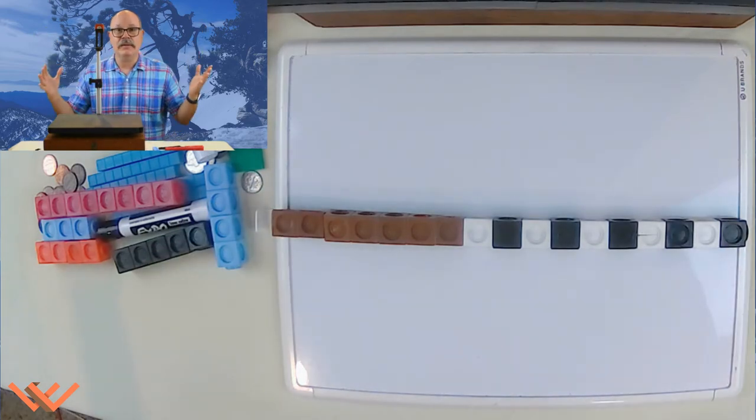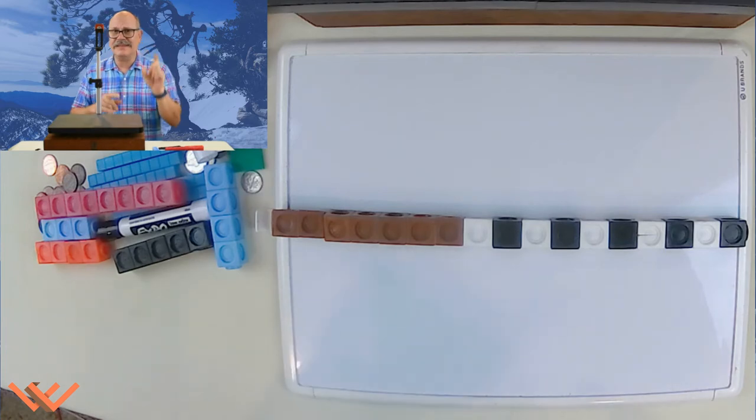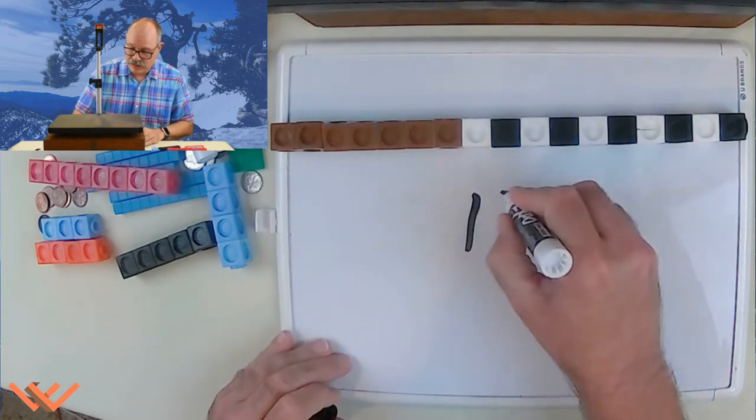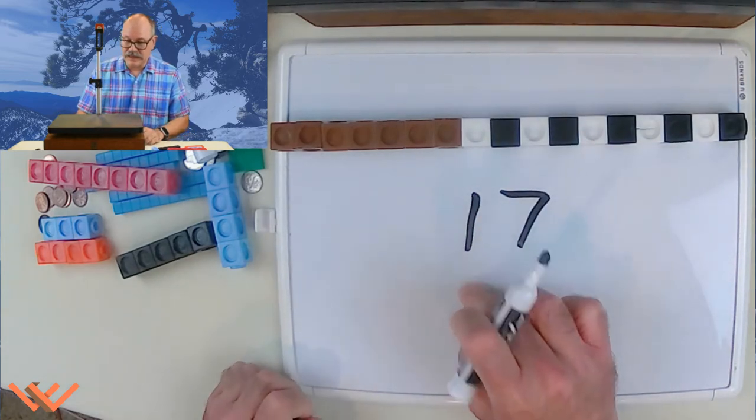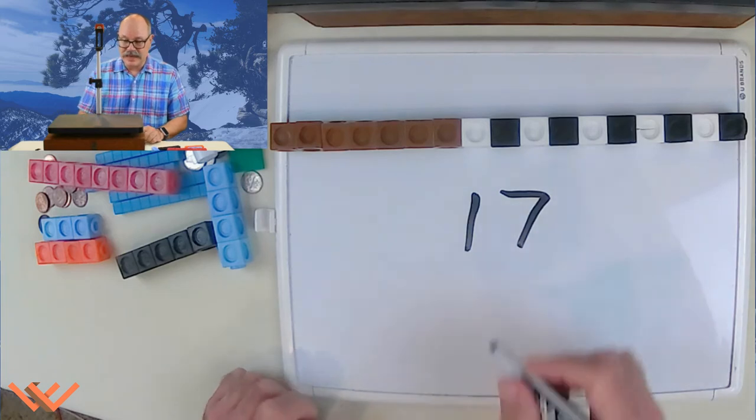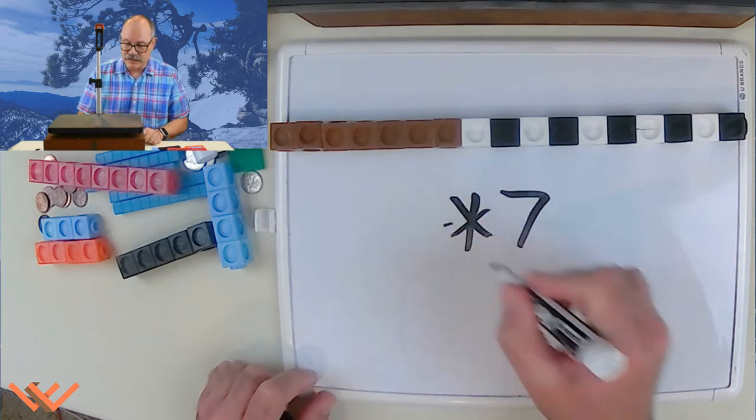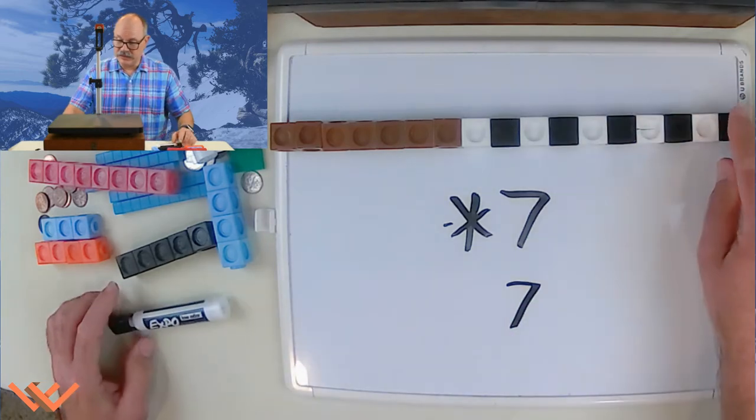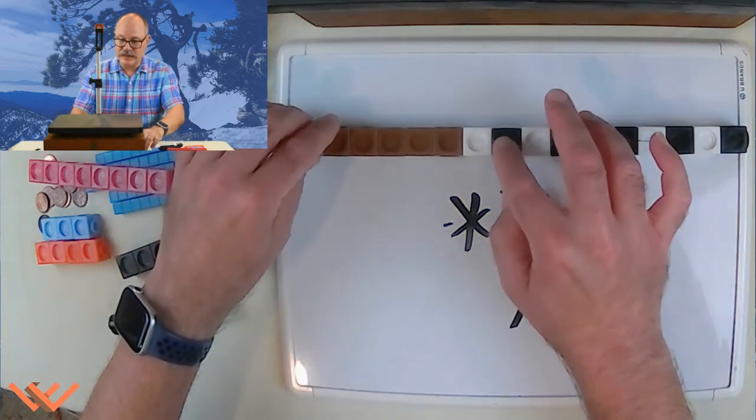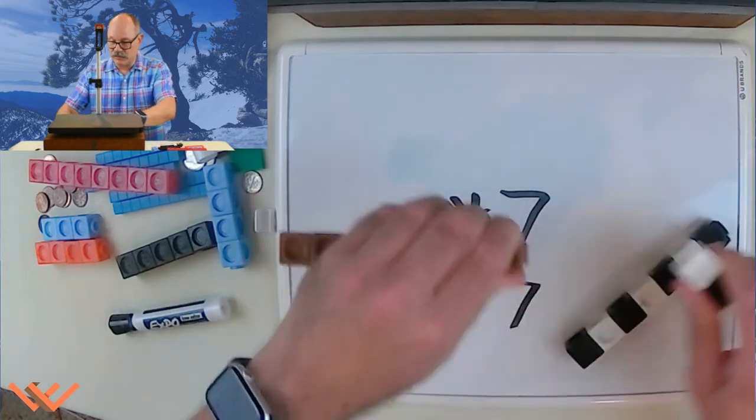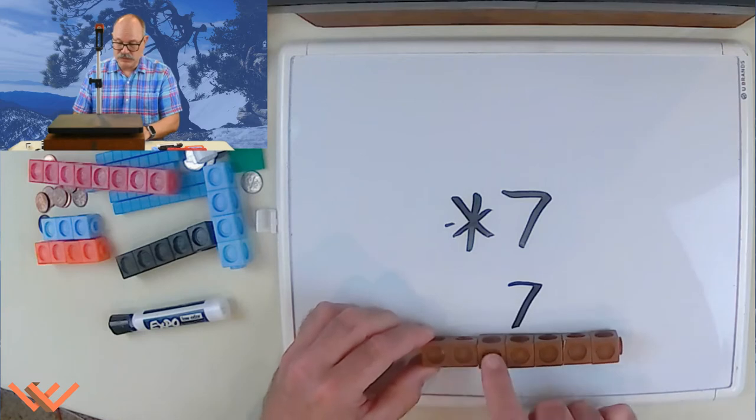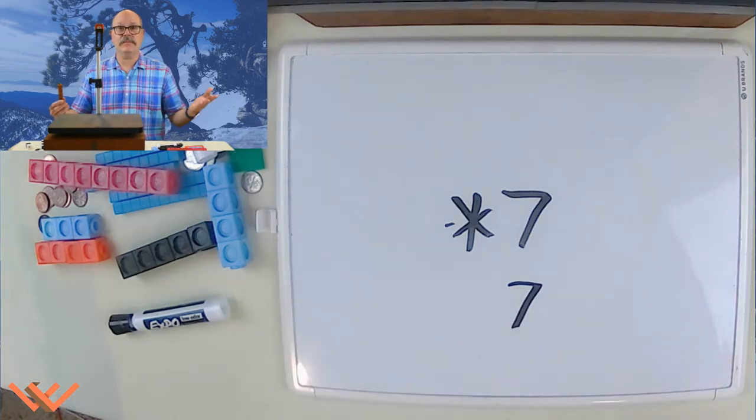There you go. Now, I'm going to take 10 away. What do you think that's going to do? So 17 has one 10 and seven ones. If I take that 10 away, I should just have 7. Let's take a look. This is the 10: 1, 2, 3, 4, 5, 6, 7, 8, 9, 10. That goes away, and then I have 7 left: 1, 2, 3, 4, 5, 6, 7. Easy peasy.